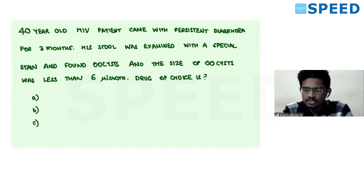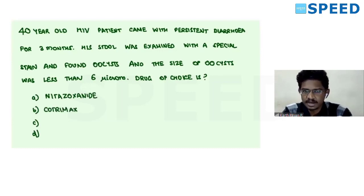What should be the drug of choice in this disorder? A: Nitazoxanide, B: Cotrimoxazole, C: Metronidazole, or D: Albendazole.